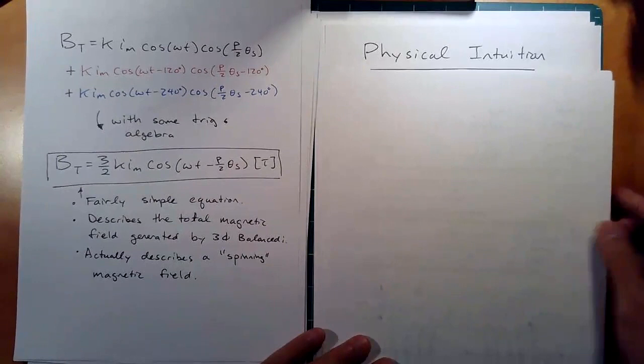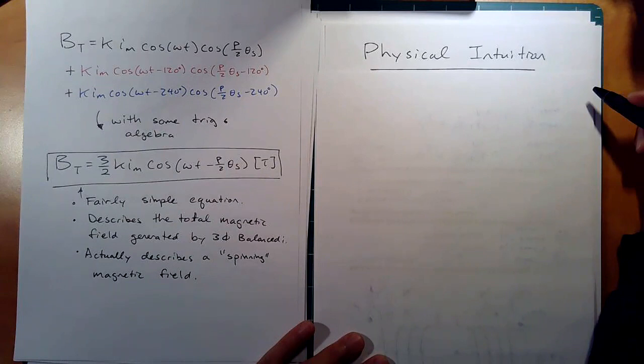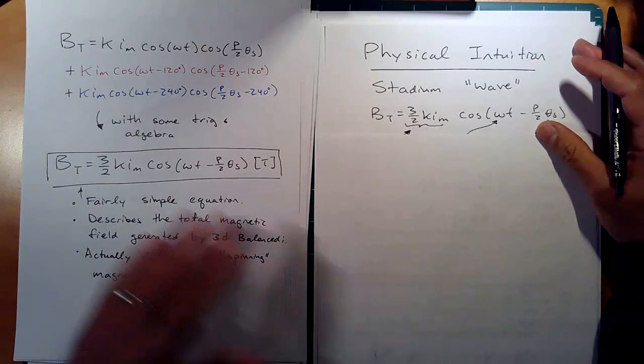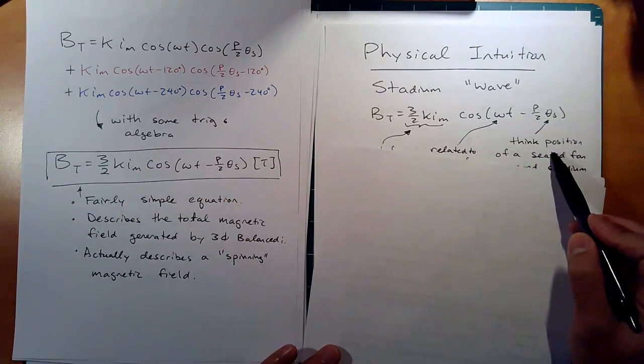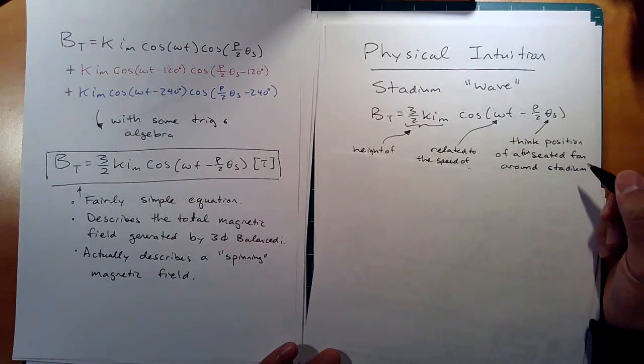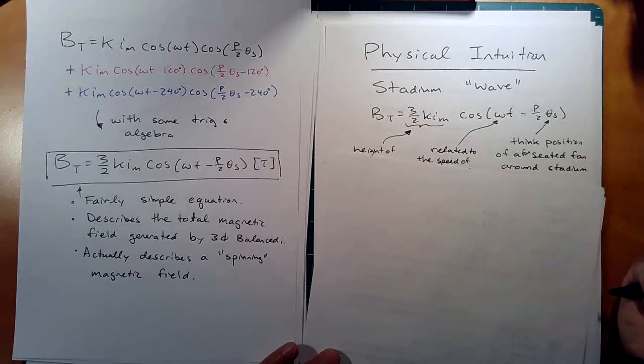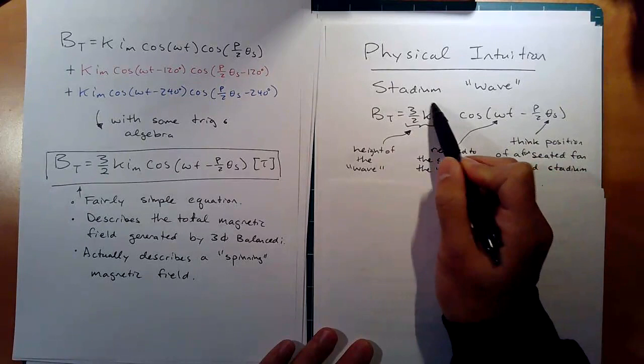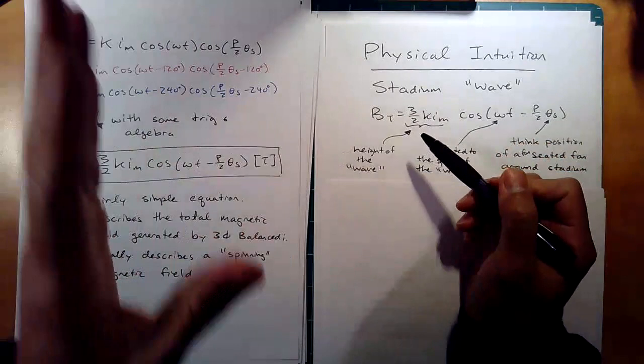The physical intuition for this equation was actually suggested by a student who asked, 'Is it like a stadium wave?' And yes, that's exactly what it's like. Think of theta s as the position of a seated fan around the stadium. Omega is related to the speed of the wave — not exactly the wave speed, but related. And the amplitude is essentially the height of the wave, like how high you stand up.